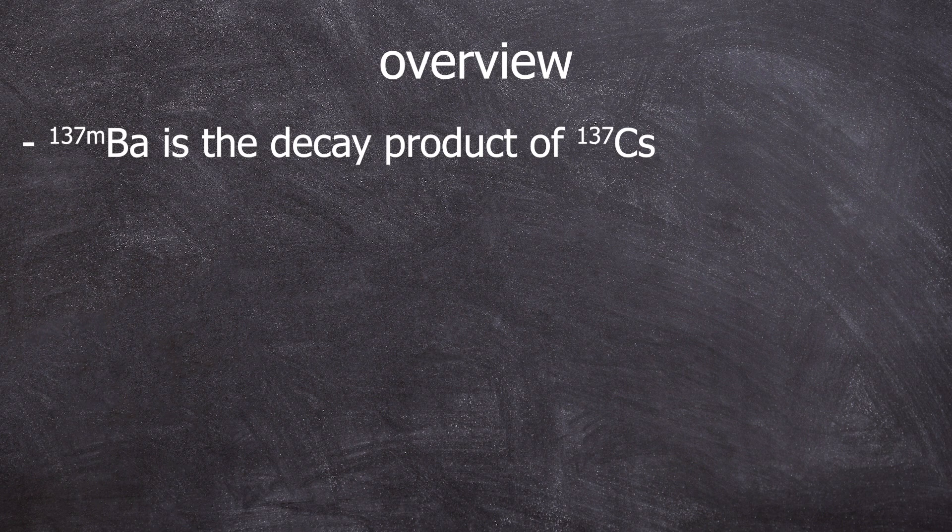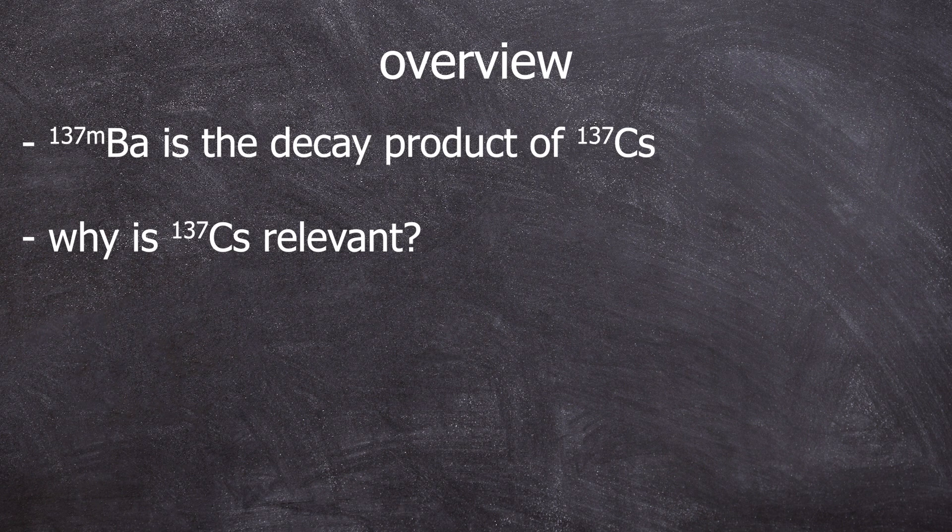Barium-137M is the decay product of Cesium-137. Cesium-137 is one of the most well-known fission products. More information can be found in this video, but here are the key points.